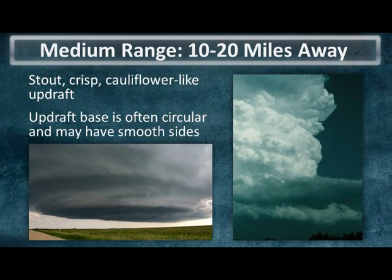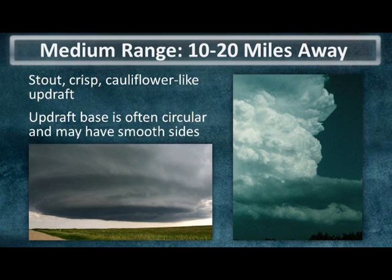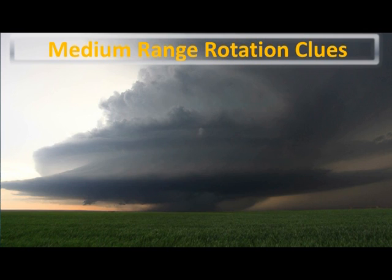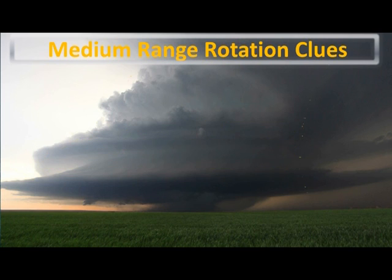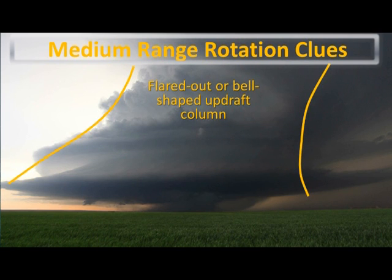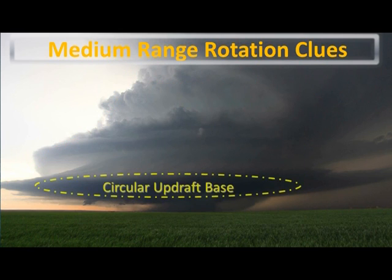Getting into the medium range, say 10 to 20 miles away, start looking for crisp or cauliflower-like edges to the updraft, indicating it's very strong with well-defined edges. Also look for a circular updraft base that may have smooth sides with indentations indicating rotation. At this range you can see striations in the middle and upper levels of the supercell, and a flared-out or bell-shaped updraft column, as well as that circular updraft base in the lower portions of the storm.